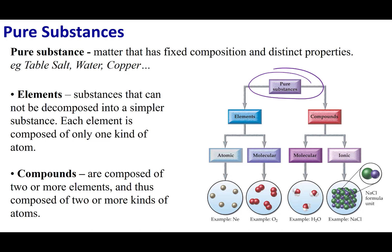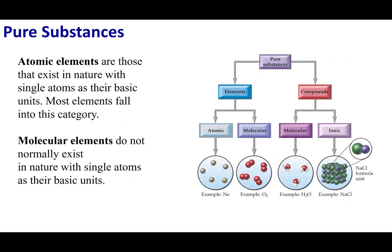A pure substance can either be an element or a compound. Elements are made out of one type of atom. We can further categorize elements into two classes: atomic and molecular. An example of an atomic element is neon. Neon is a noble gas, so I just have one atom of neon flying around. Since it's only made out of one type of atom, it's considered an element.